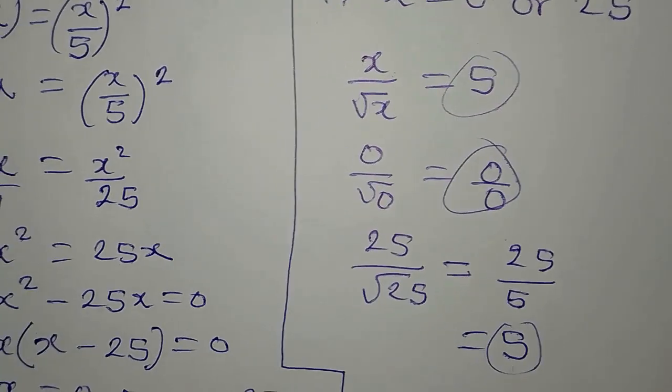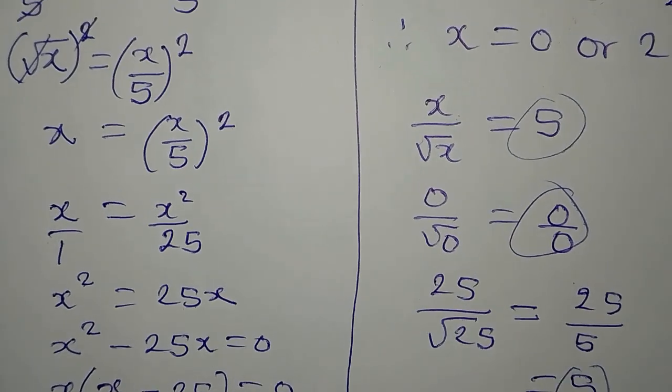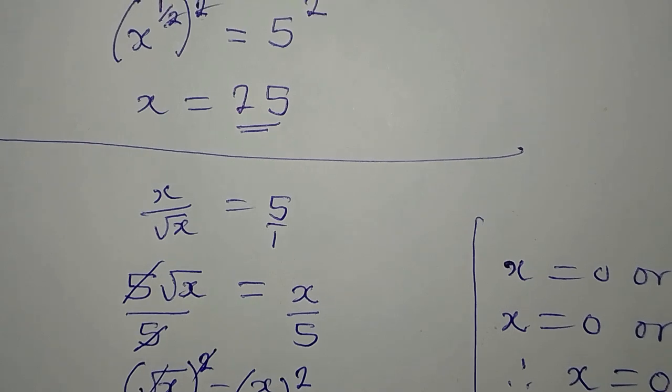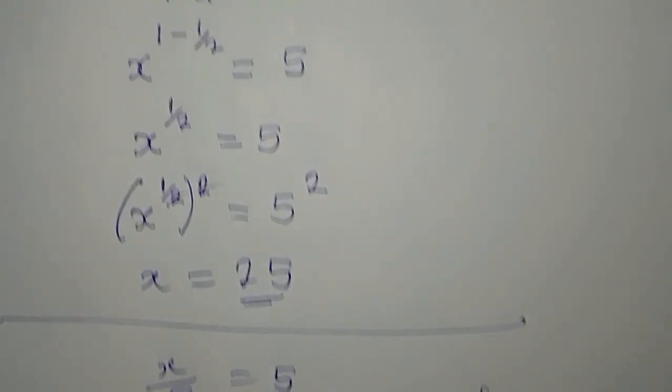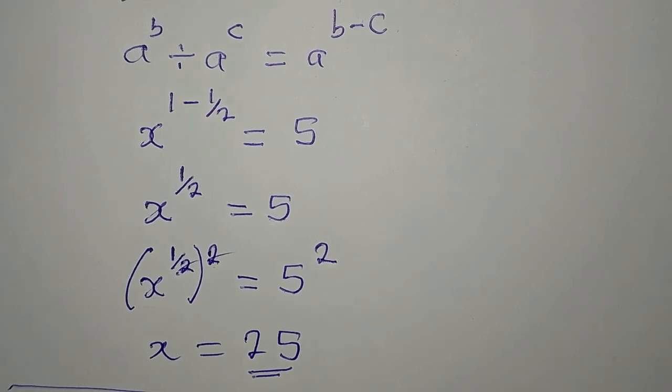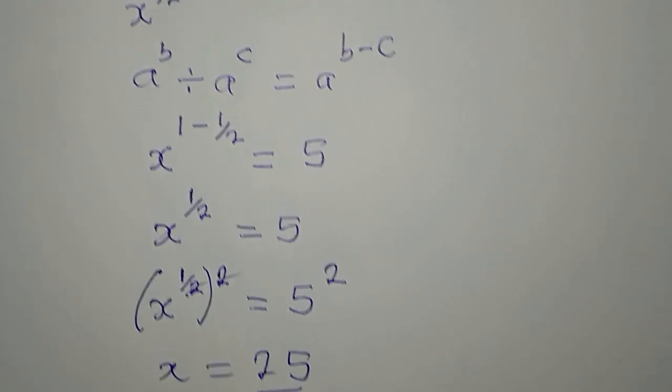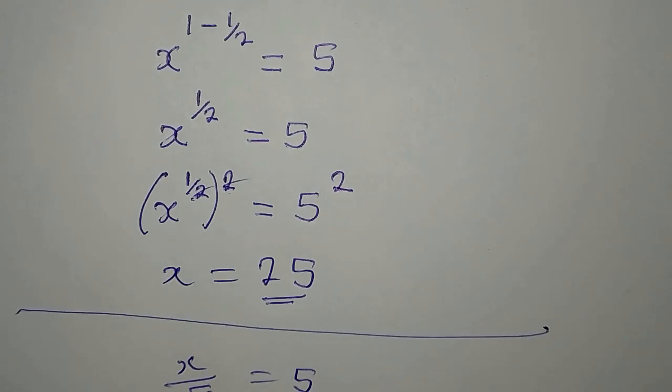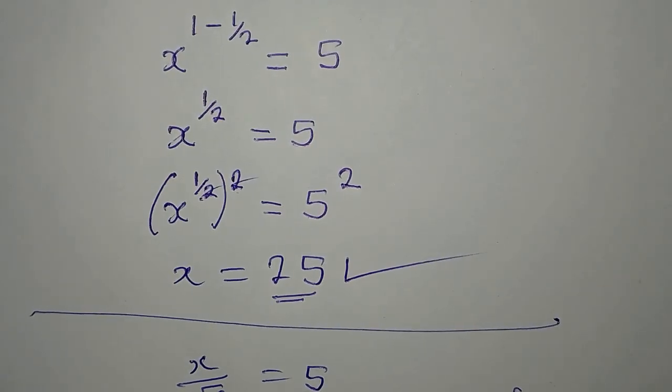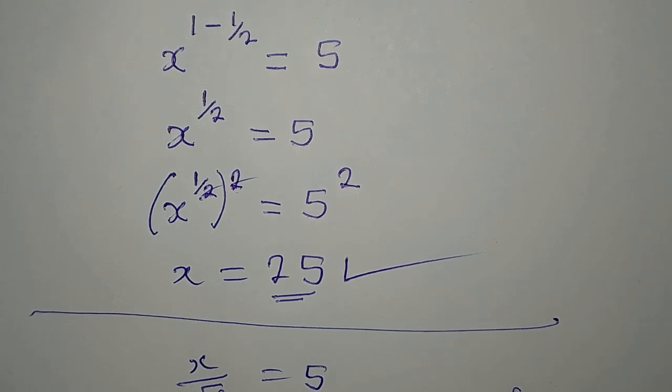So, if you are to apply any of these methods in examination, what you should do is to apply the first method. Because the first method gave you just the real solution, not the one that would not be satisfying. Because 0 did not satisfy. Thank you for watching this to the end. If you loved this, subscribe to my channel and share this to your friends.